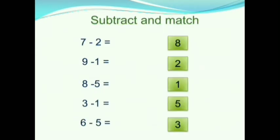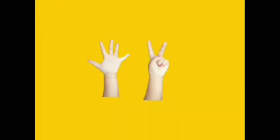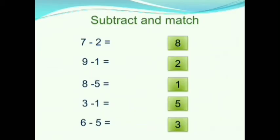Children, now we should subtract the numbers on the left side and match the answers with the number on the right side. First question is 7 minus 2. We will represent it by fingers. The first number is 7, so here we have 7 fingers. The second number is 2, so we will fold 2 fingers. How many fingers are left? 1, 2, 3, 4, 5 fingers are left. So we will write 5. Therefore, 7 minus 2 is equals to 5.